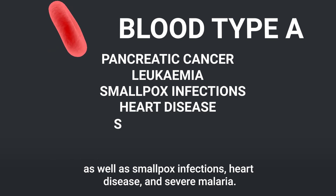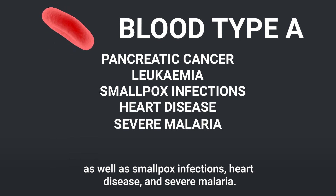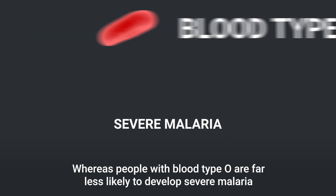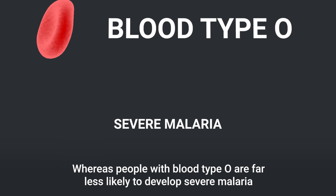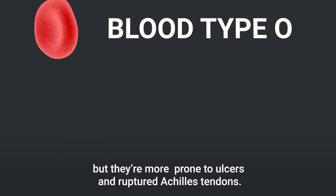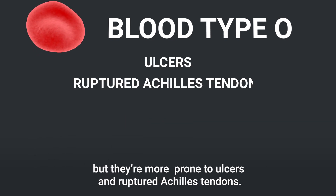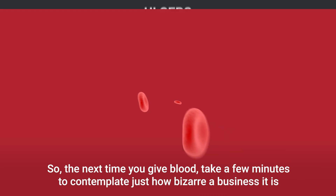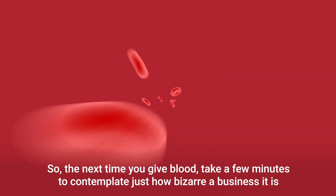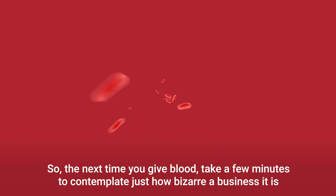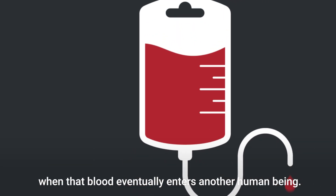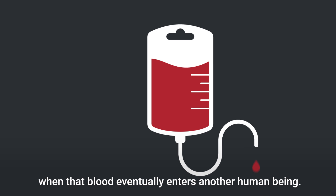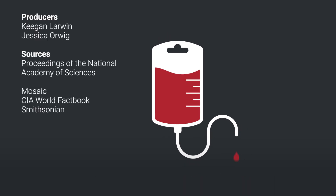People with blood type A also face higher risk of heart disease and severe malaria, whereas people with blood type O are far less likely to develop severe malaria, but they're more prone to ulcers and ruptured Achilles tendons. So the next time you give blood, take a few minutes to contemplate just how bizarre business it is when that blood eventually enters another human being.